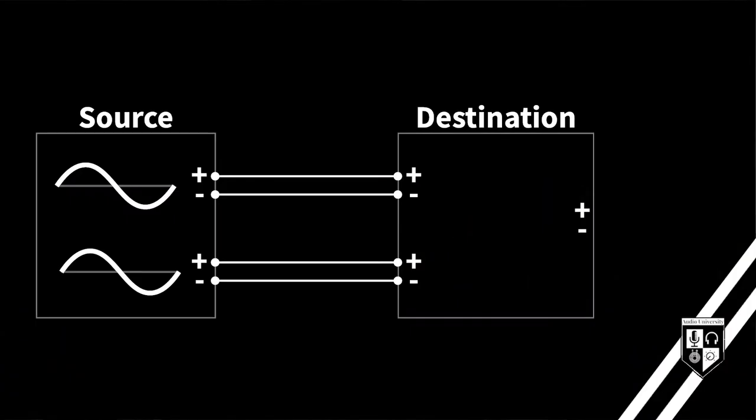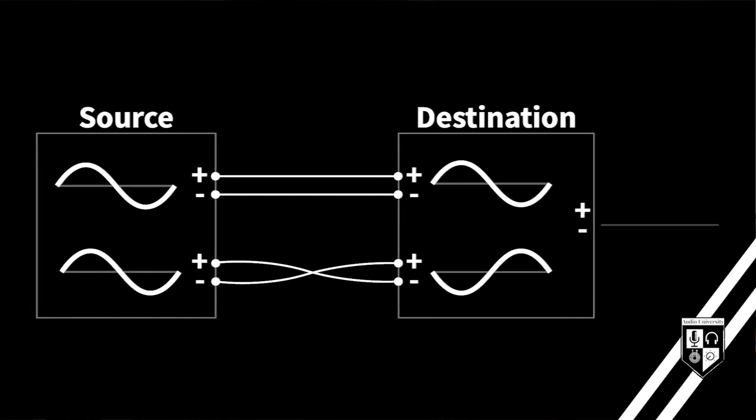Reversing the positive and negative wires on one of the cables will invert the polarity of the signal passing through that cable. Now the signals are in opposite polarity. When they're mixed together at the destination, they'll completely cancel out. This is called destructive interference.